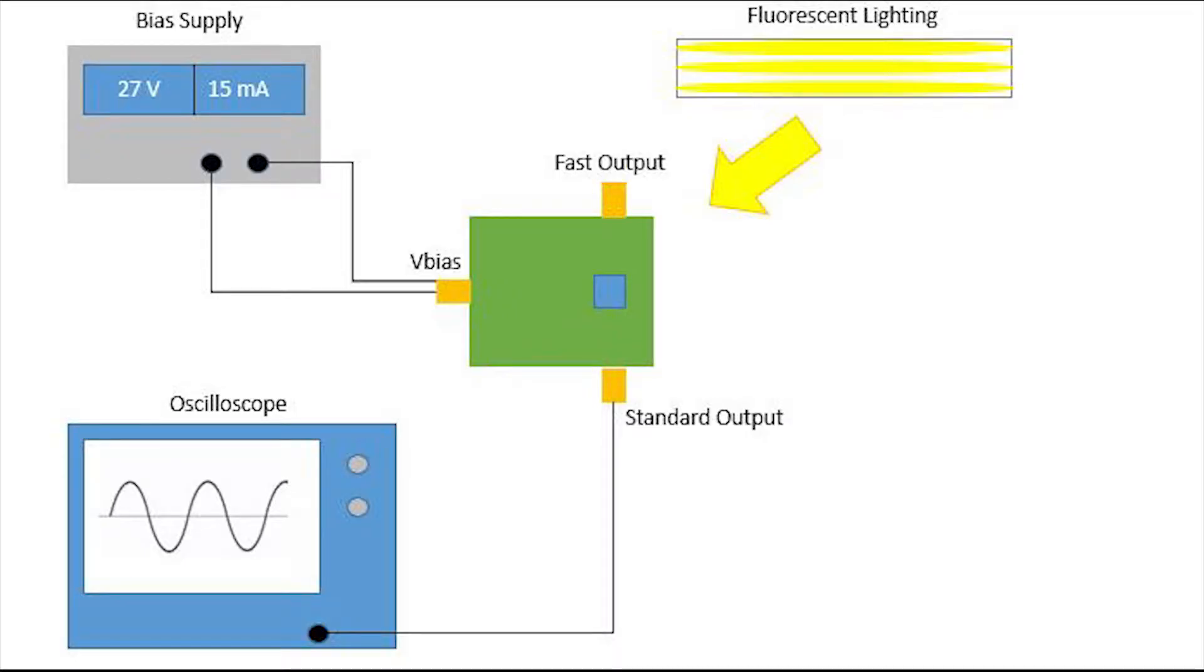The SIPM SMA evaluation board is powered by a bias supply of 27 volts and 15 milliamps. The standard output is connected to an oscilloscope and fluorescent lighting provides the input in this experiment.